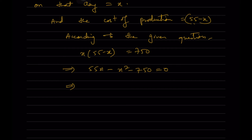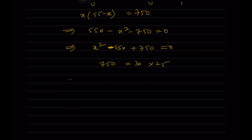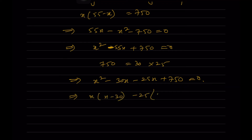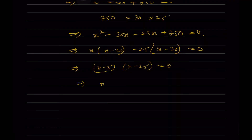Rearranging: x² - 55x + 750 = 0. The factors of 750 are 30 × 25, and 30 + 25 = 55. So x² - 30x - 25x + 750 = 0, giving x(x - 30) - 25(x - 30) = 0, which implies (x - 30)(x - 25) = 0. So x = 30 or x = 25.